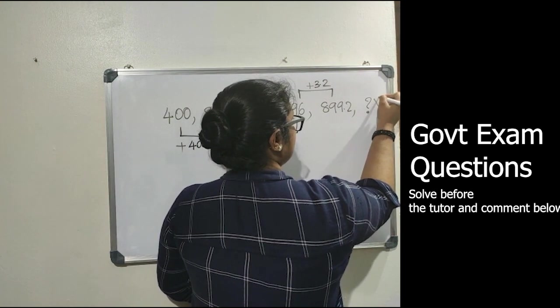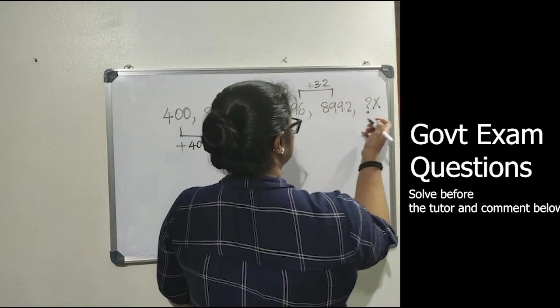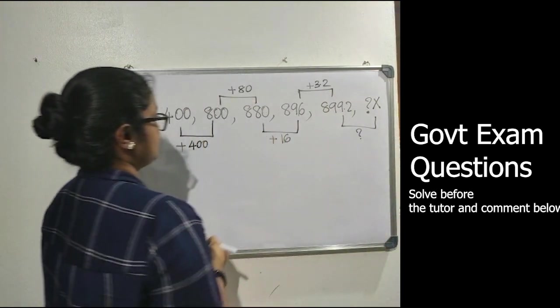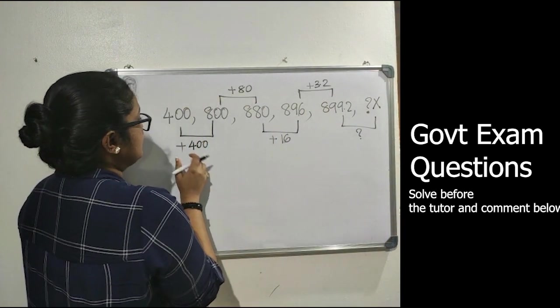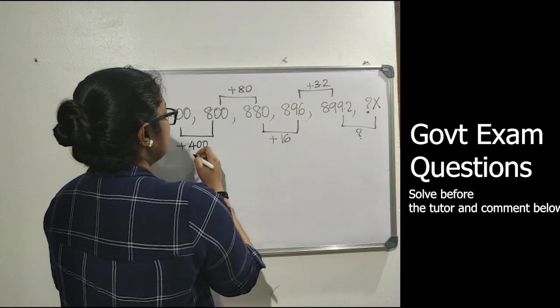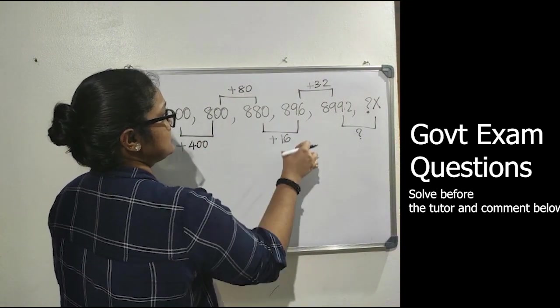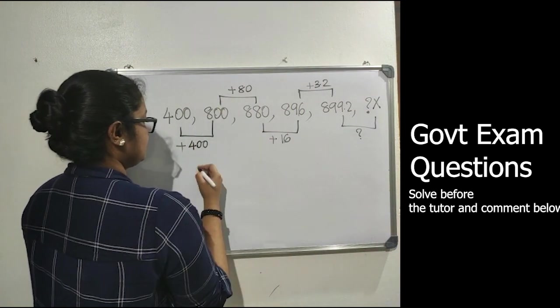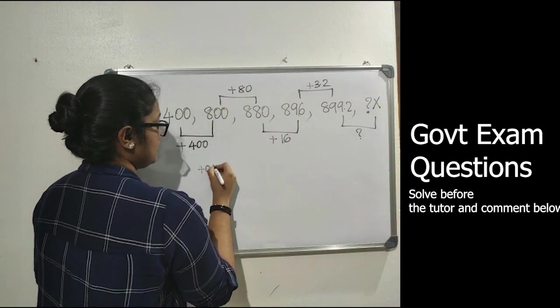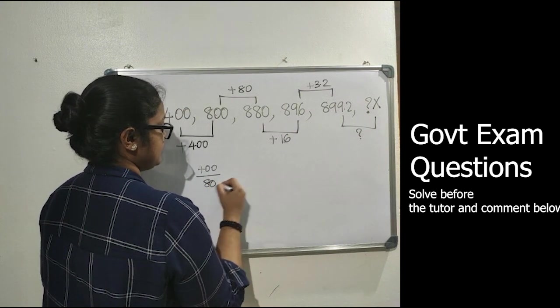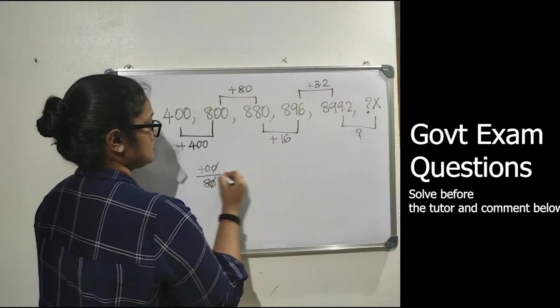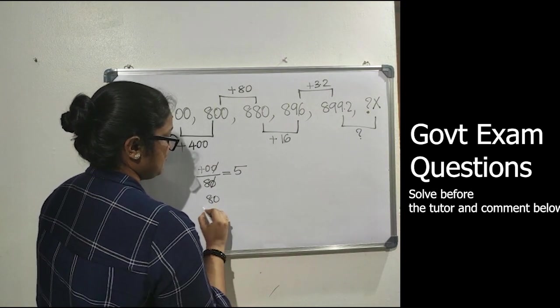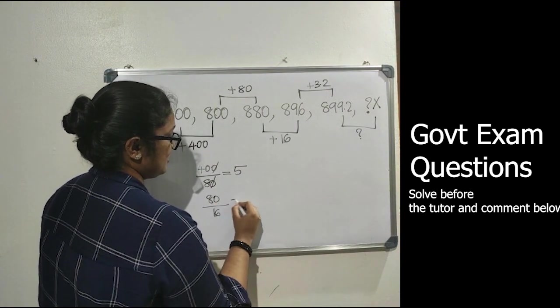We need to find the value of the last number, that is x. We don't know the difference. So we can see that the difference is 400, 80, 16, 3.2. Let us find the relation between the differences. Let's see, 400 by 80 equals 5. Then 80 by 16 equals 5, again 16 into 5 is 80.